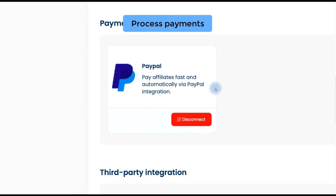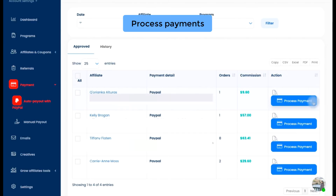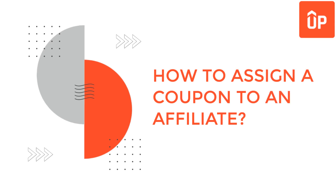To pay automatically with PayPal, you need to integrate with your PayPal account in UpPromote, and the system can then transfer money from your PayPal wallet to your affiliates' PayPal accounts. Now that you understand basically how UpPromote works, let's explore some of the basic features which might be helpful.